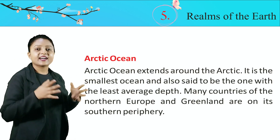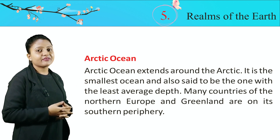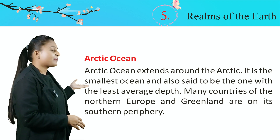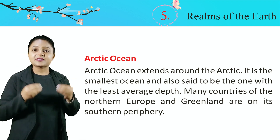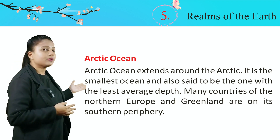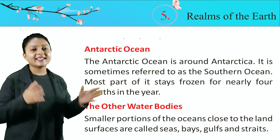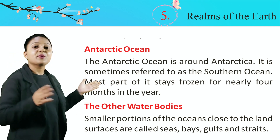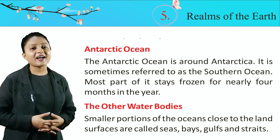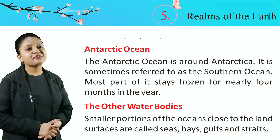Arctic Ocean. The Arctic Ocean extends around the Arctic. It is the smallest ocean and also said to be the one with the least average depth. Many countries of northern Europe and Greenland are on its southern periphery. Arctic Ocean sabse kam gehra aur sabse chhota ocean hai. Antarctic Ocean. The Antarctic Ocean is around Antarctica. It is sometimes referred to as the Southern Ocean. Most part of it stays frozen for nearly four months in the year. Iska zyaadatar hissa hamesha frozen rehta hai.